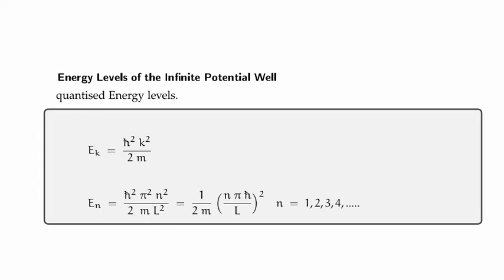And if we put our wave number into the expression for the energy, we find that the energy for a particle is given by this expression, which is exactly the same as when the wave function existed between x equal to 0 and x equal to L. In other words, the width of the well is the only thing that's important for the energy, and since we have the exact same well width, we have the exact same energy.